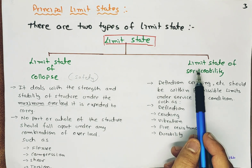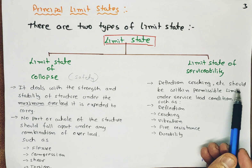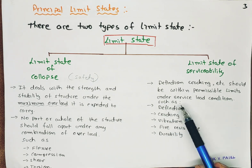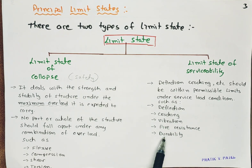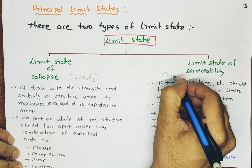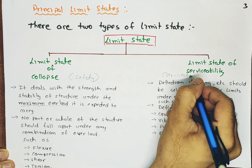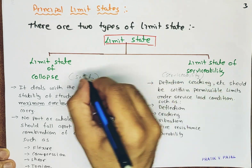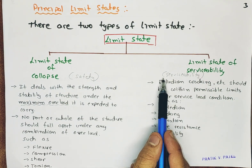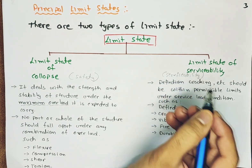Whereas the limit state of serviceability says that deflection, cracking, etc. should be within permissible limits under service load conditions — such as deflection, cracking, vibration, fire resistance, and durability. Here we are talking about serviceability. Besides safety, there should be serviceability in the structure and environment we live in.